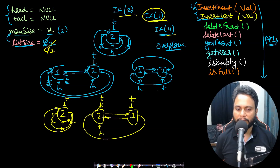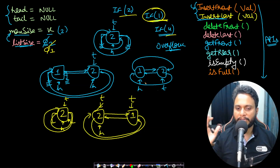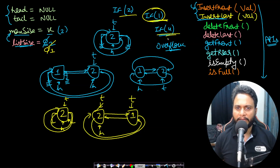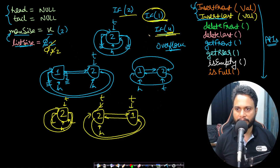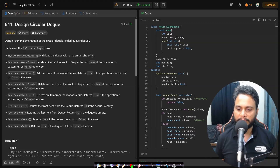The new tail's next pointer points to head, and head's previous pointer points to the new tail. So we insert on the right-hand side — this is insert last. If insert last of 4 comes in, the list size is now 2, which equals max size, so we cannot insert and must return false.